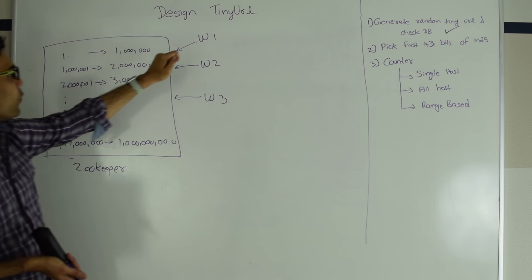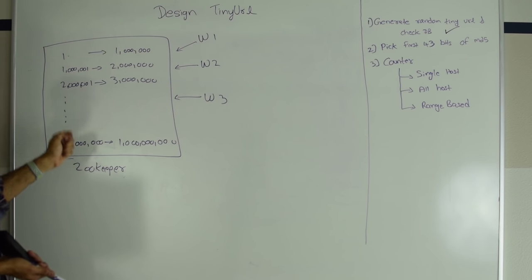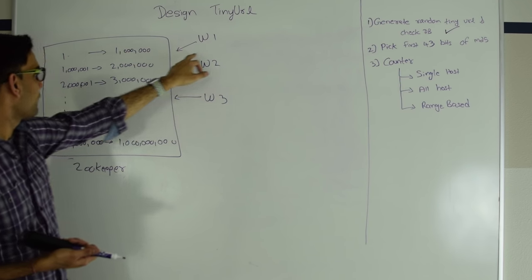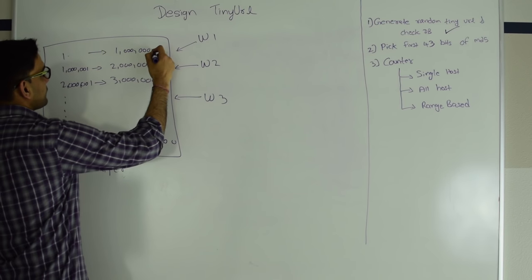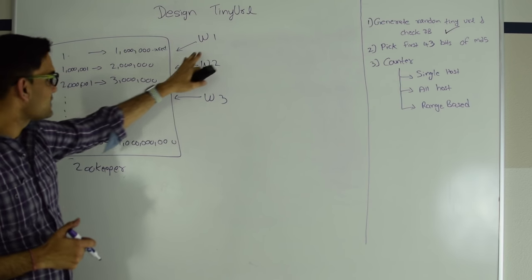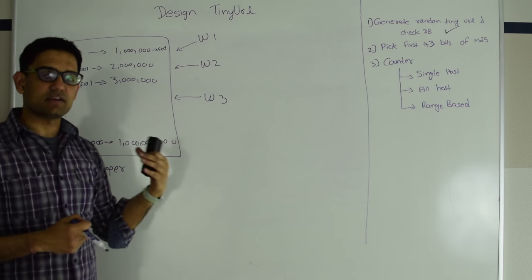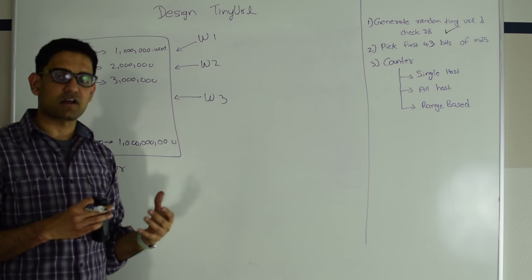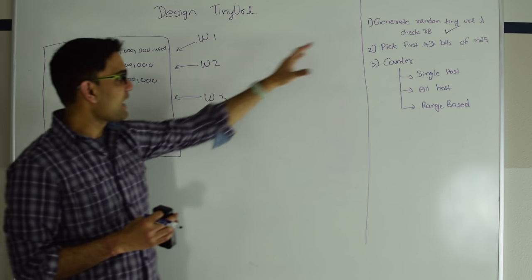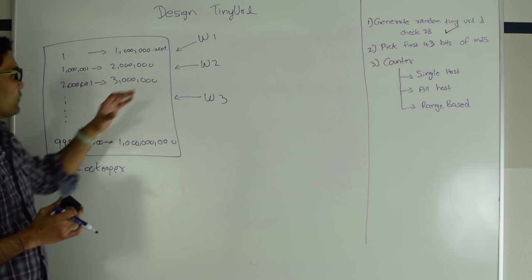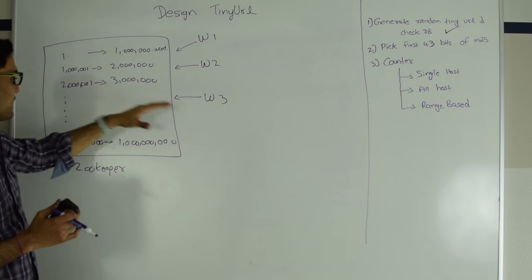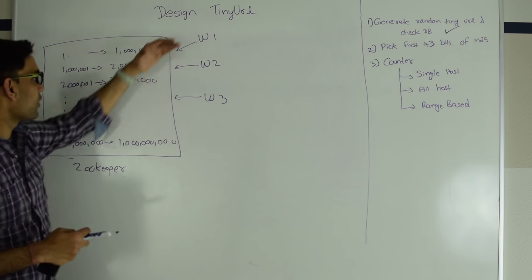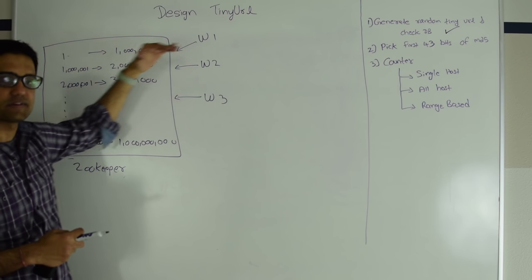Worker threads come to Zookeeper and say 'give me an unused range.' When starting fresh, all ranges are unused. Worker 1 comes and claims range 1 to 1 million — that range is marked used, and whenever Worker 1 gets a create-tiny-URL request it increments an internal counter within that range to generate a unique number, then generates the tiny URL from that. Worker 2 comes and gets range 1 million to 2 million, and so on. This guarantees no collision because all worker hosts are working within distinct ranges.